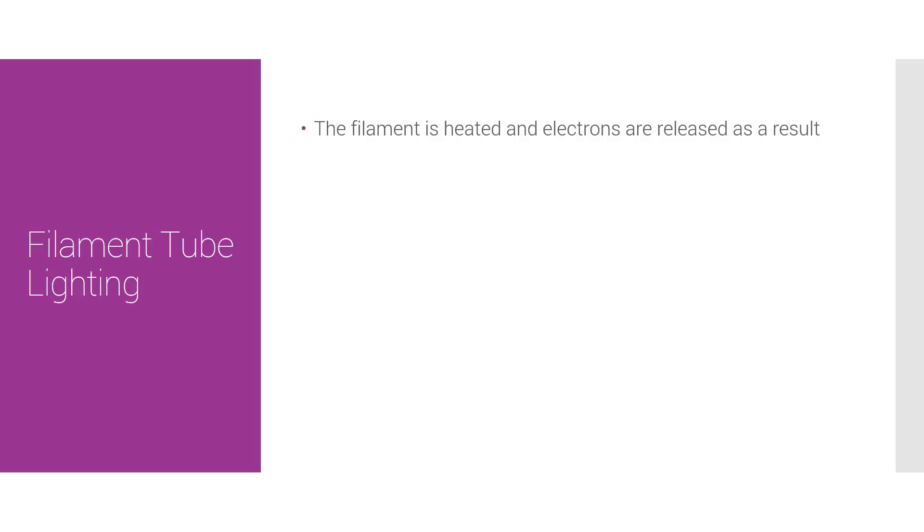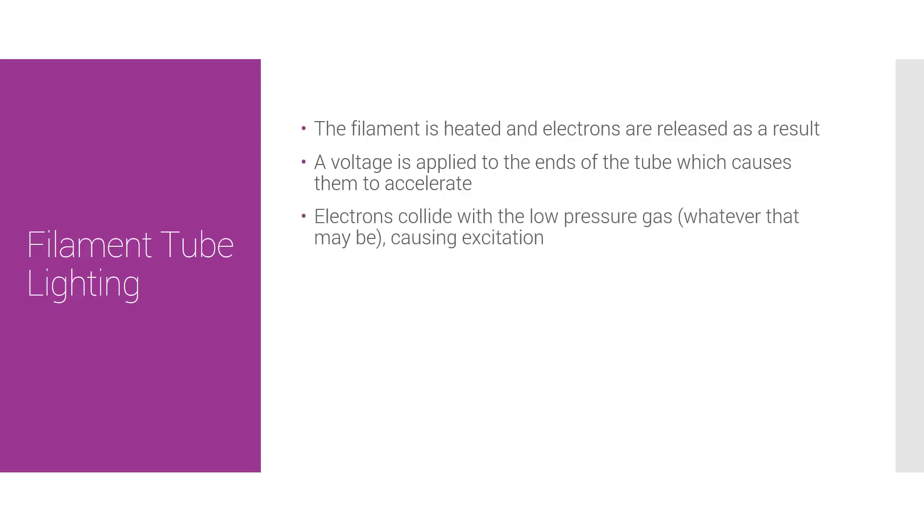The filament is heated and electrons are released as a result. A voltage is applied to the ends of the tube, which causes them to accelerate due to current. Electrons then collide with the low pressure gas, whatever that gas may be, which causes excitation.